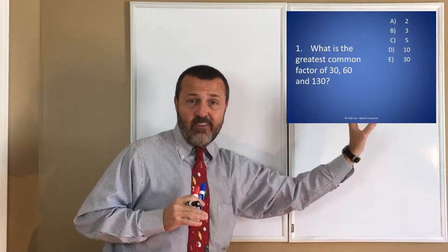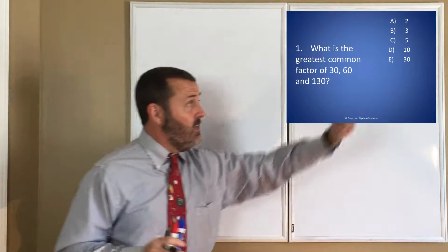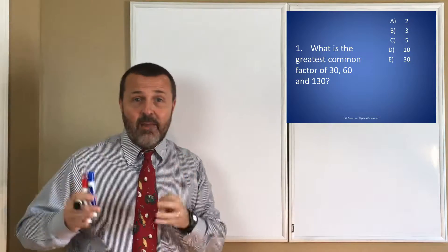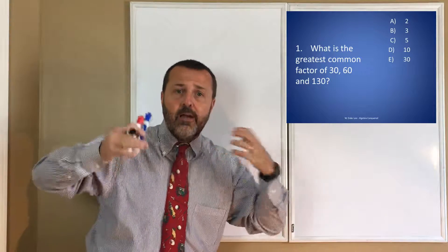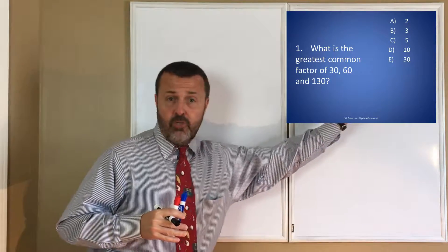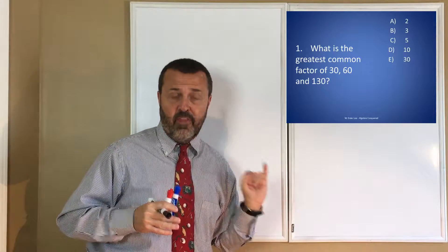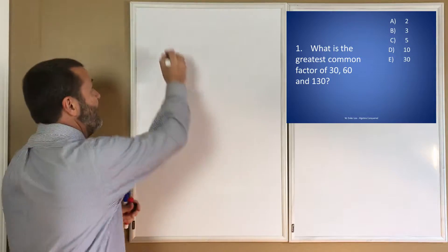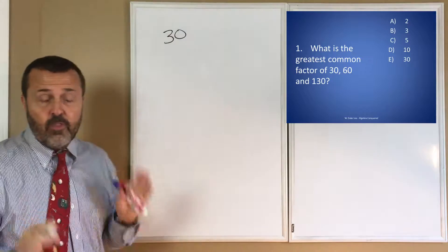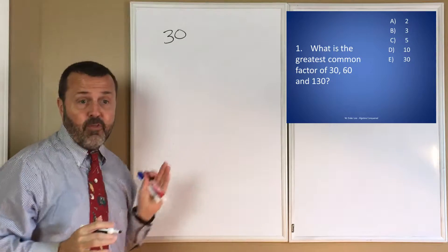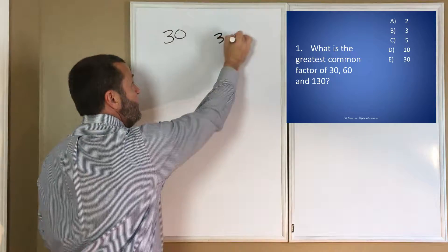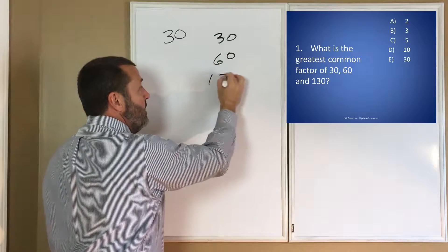Keep in mind that we have five answer choices on the ACT. One of these five answers has got to be the correct choice. We're talking about greatest, so I'm going to choose E to start with and ask myself, is 30 the greatest common factor of 30, 60, and 130?